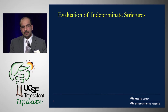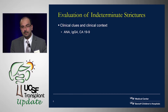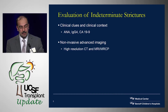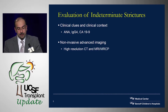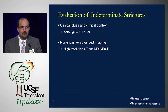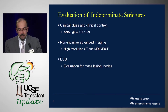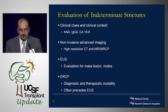Starting with indeterminate strictures and moving to PSC: clinical clues include ANA, IgG4, CA-199 — about 50% of patients with autoimmune cholangiopathy may have a positive ANA. I cannot overemphasize the importance of good quality, noninvasive imaging. As advanced endoscopists, we get carried away wanting to put in the scope, but we can learn a lot from high-resolution CT, MRI, and MRCP without touching the patient. Then we use EUS for evaluation of strictures, lesions, and nodes, and ERCP both diagnostic and therapeutic.